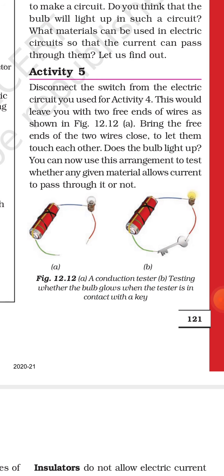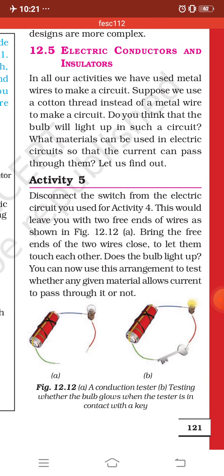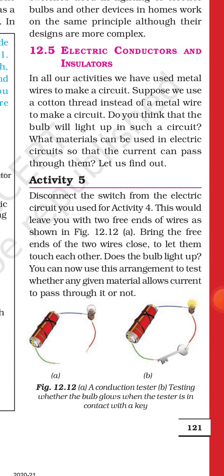We have electric conductors and electric insulators. Those materials that can conduct electricity are called electric conductors. Those materials that cannot conduct electricity are called electric insulators. When we are using an electric switch, we have to use only those metals that can conduct electricity. For example, a pin or a key. If we use a piece of wood, it will not conduct electricity because it is an insulator, not a conductor.